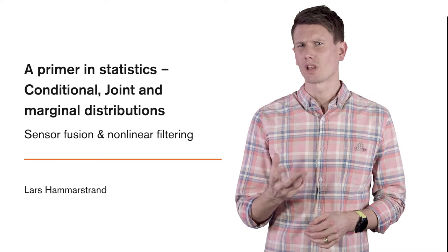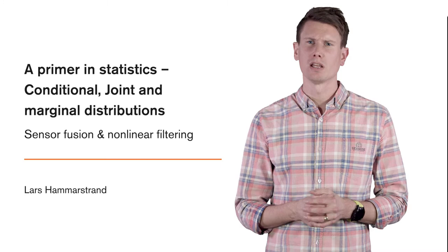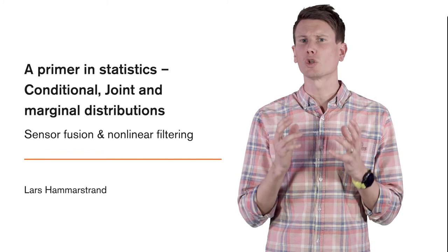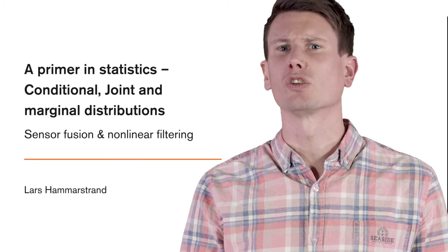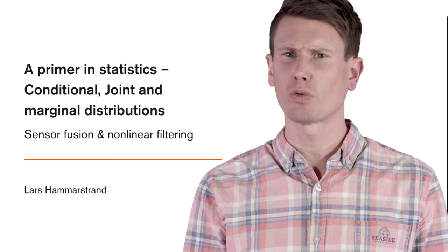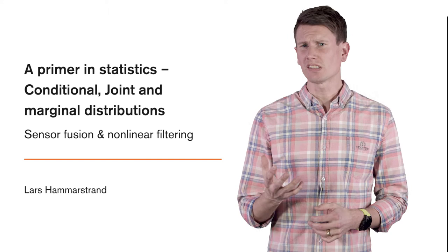In this course, we're very interested in how the distribution of two or more random variables depend on each other. We do this by mainly considering the so-called conditional and joint distributions. Additionally, we're also interested in knowing the so-called marginal distribution, which is the isolated distribution of a single random variable where we have removed the influence of all the other variables. All of these are central in the understanding of our nonlinear filtering methods.